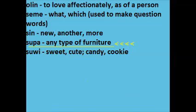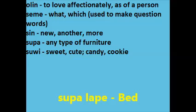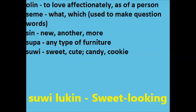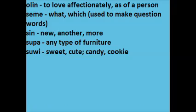'Supa' is really just furniture, but here's a common compound word: 'supa lape', which means bed. 'Suwi' is just suwi, but if you've checked the compound word list you'll know about 'good looking' and 'bad looking' or ugly. You can also say 'suwi lukin', meaning sweet-looking or cute.